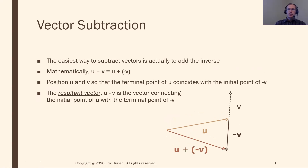Subtracting vectors is a little harder. The easiest way is to use the definition of subtraction: u minus v is the same as u plus negative v. We know how to add vectors, and we know a negative sign flips a vector in the exact opposite direction. So to compute u minus v, start with u, flip v to get negative v, then add them together. That's u plus negative v, which equals u minus v.